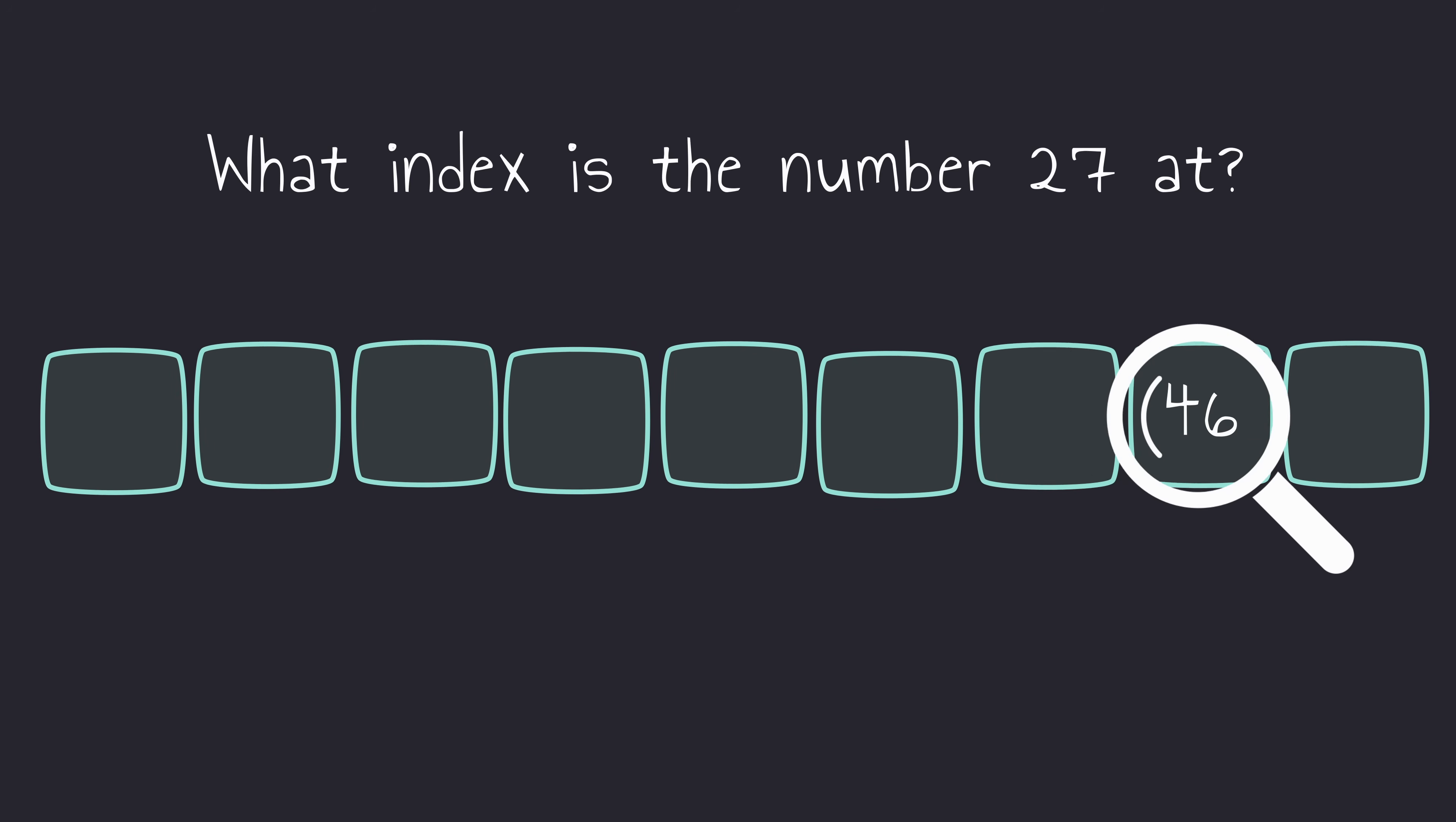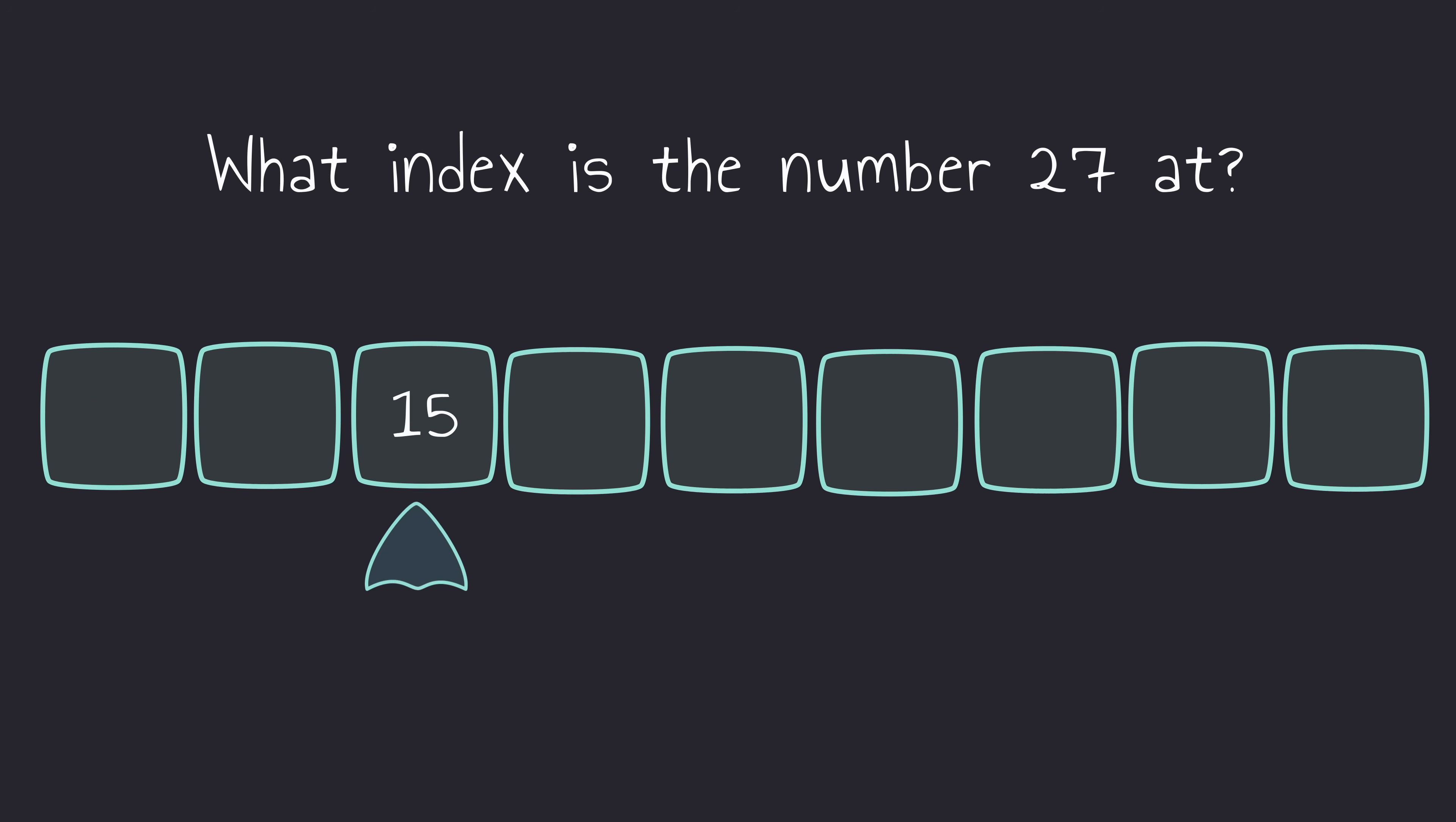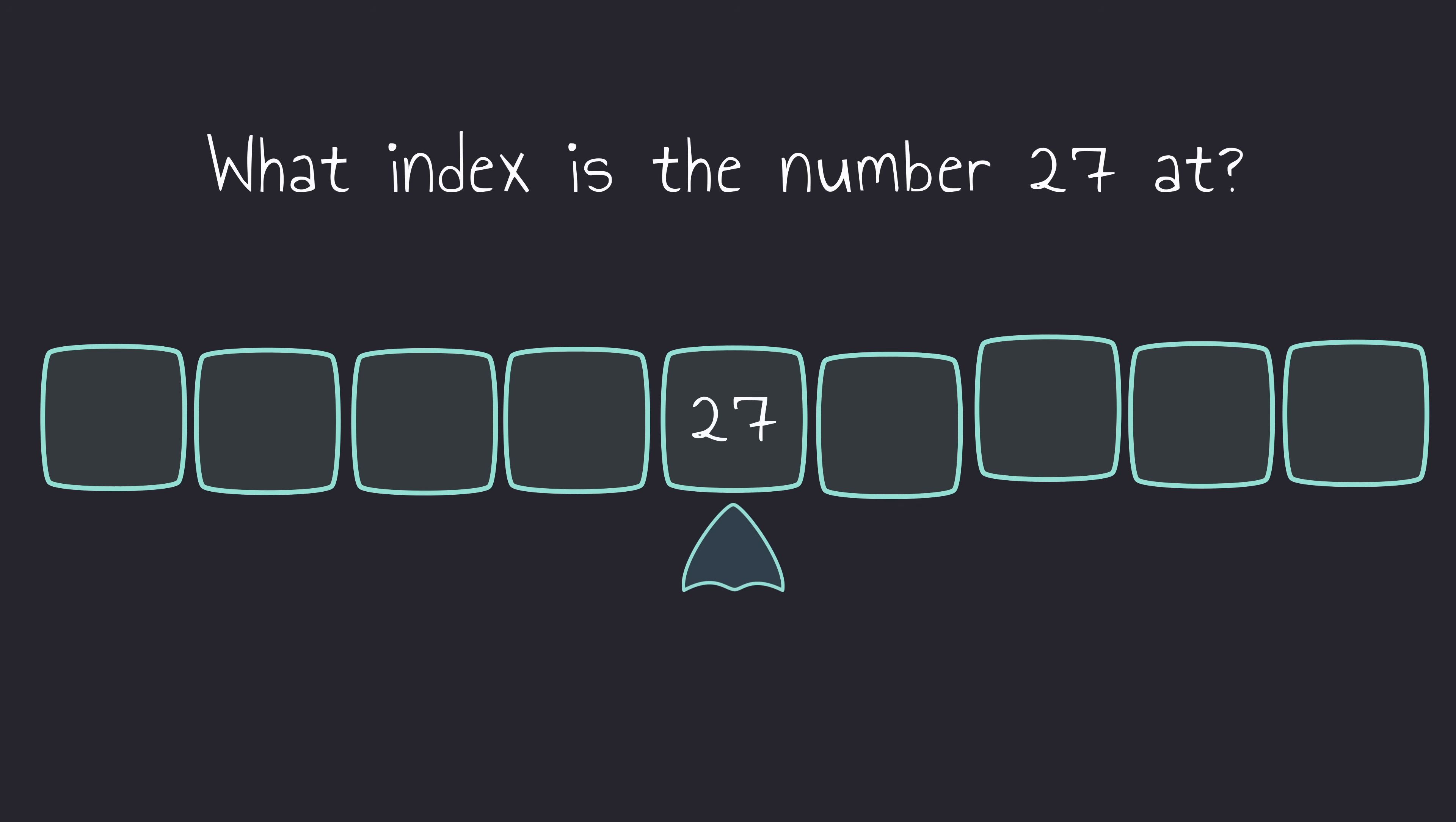Well, in that case, the simplest approach would be to start at the beginning and check each number until we found, or didn't find, 27, making sure to keep a count of the numbers we had looked through. This approach, or algorithm, is called linear search.